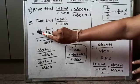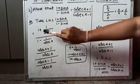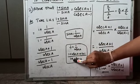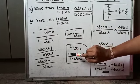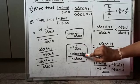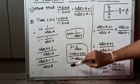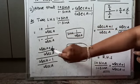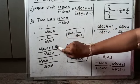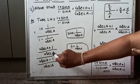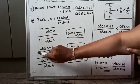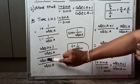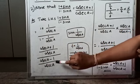Taking LCM in the numerator: 1 = 1/1, so LCM is cosec A. Numerator becomes (cosec A + 1) / cosec A. Similarly, for the denominator, LCM is cosec A. Denominator becomes (cosec A - 1) / cosec A.